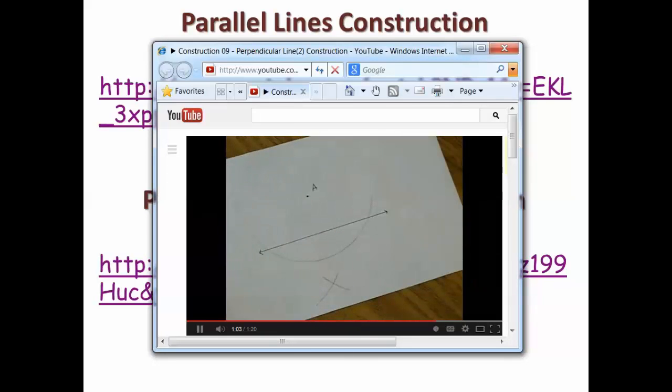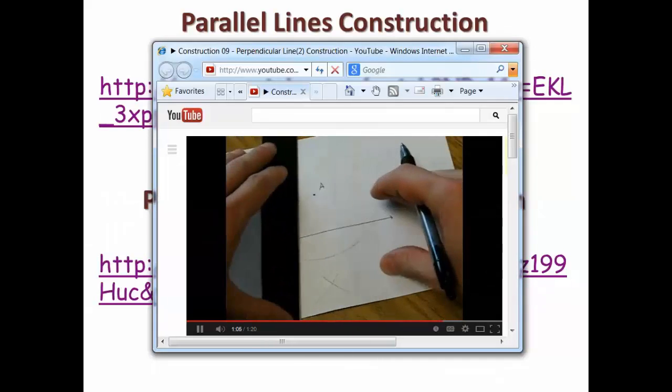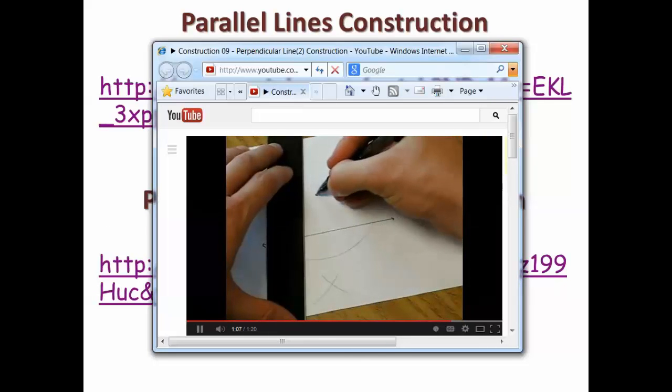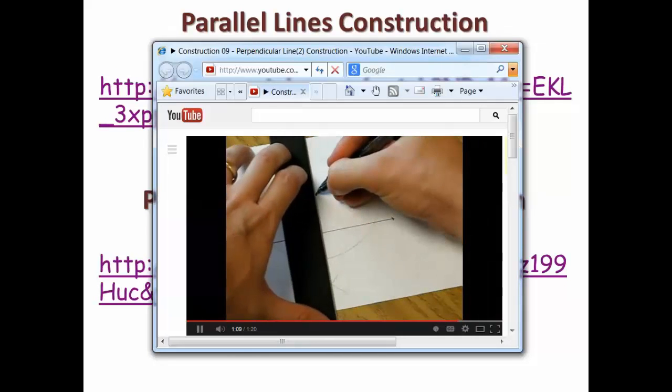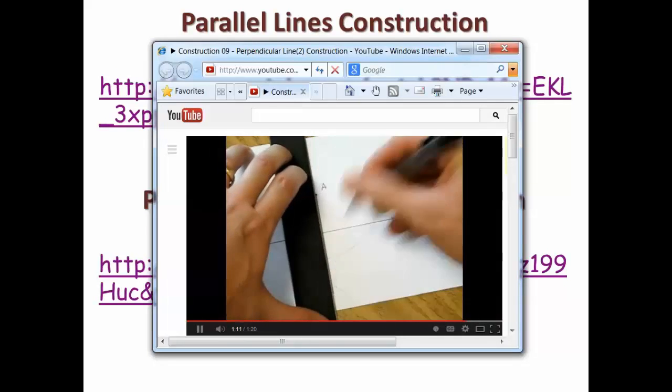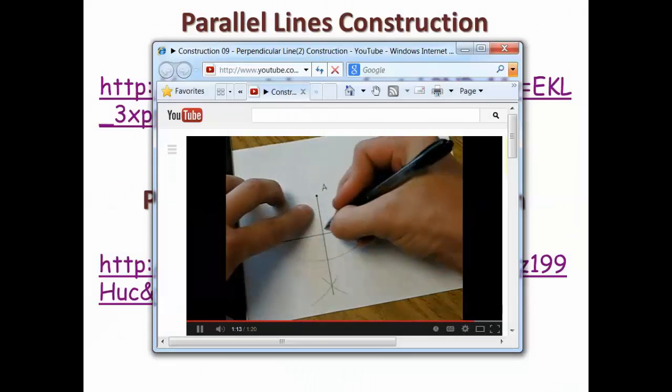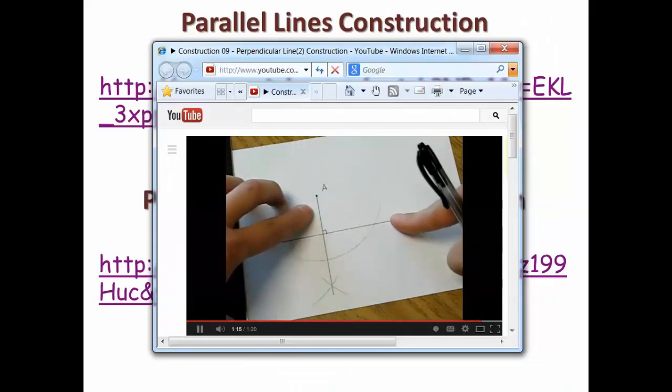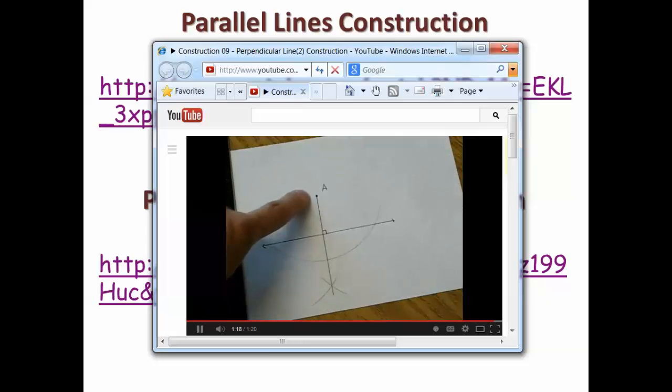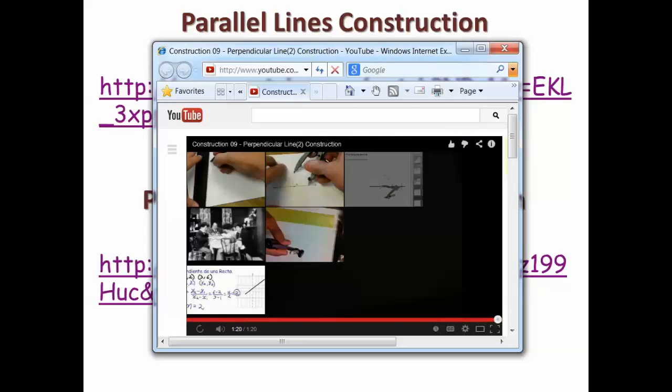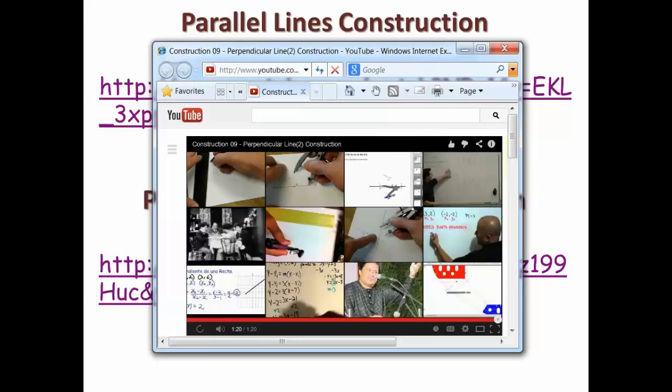Now we can connect our point A using our straightedge to our marks below the line. And here we have a line that is perpendicular to a given line but also passes through a point that's not on the line.